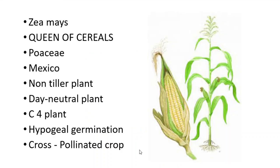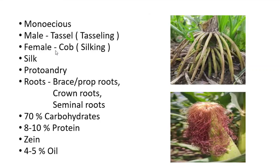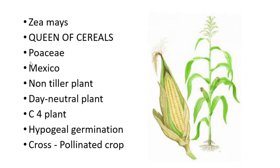The scientific name of maize is Zea mays and it belongs to the family Poaceae. It is called the queen of cereals due to its highest yield and high production. Its origin is from Mexico and Central America. It is a non-tillerous plant with no tillers, and a day-neutral plant requiring an intermediate day length of nearly 12 to 14 hours for growth. It is a C4 plant.